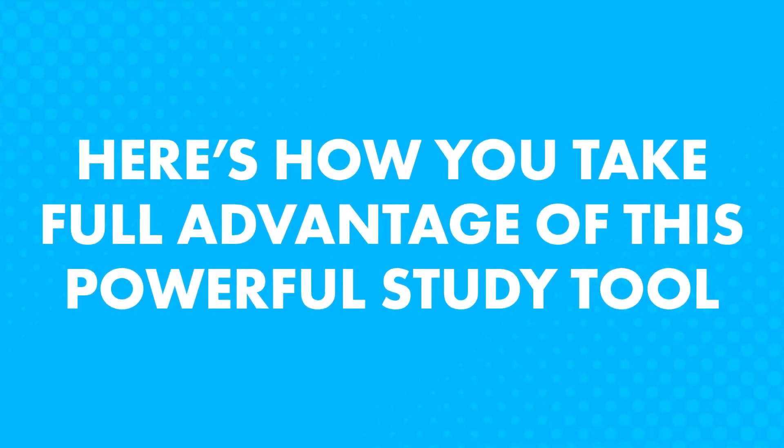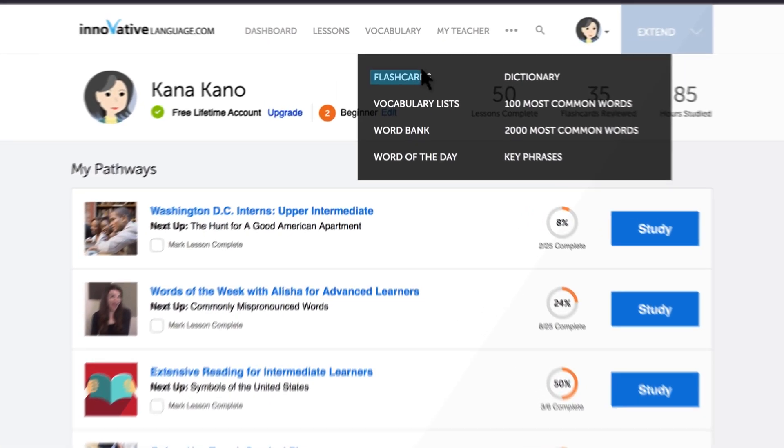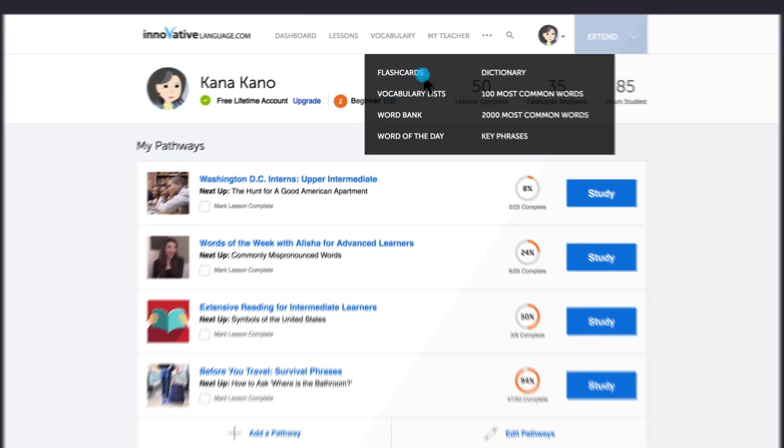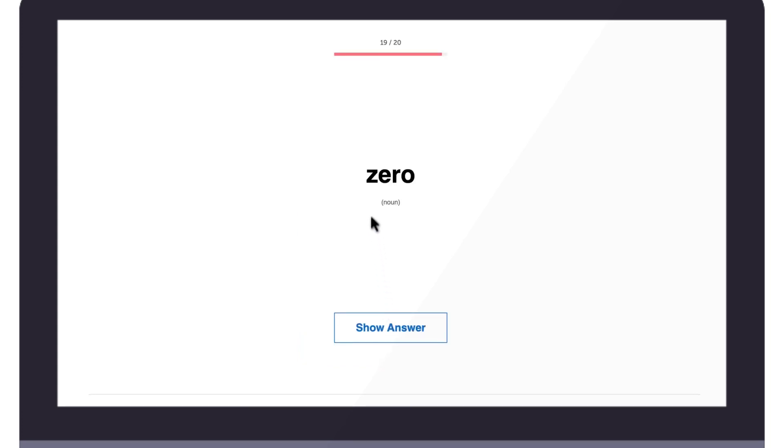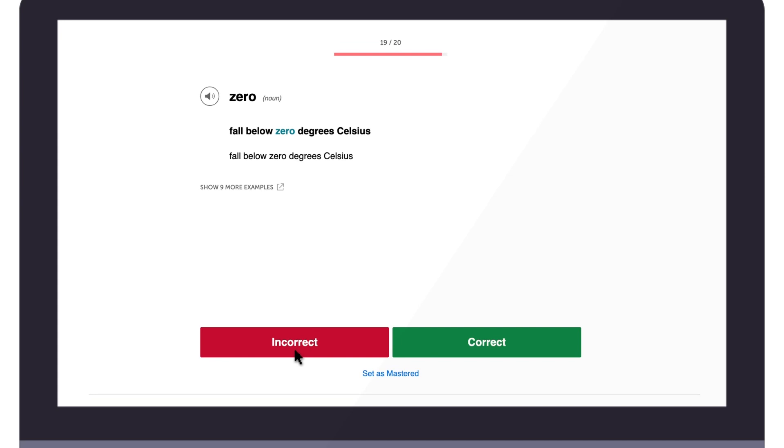Once you're done with a study session, that's it for the day. Your flashcards will remind you when to study again, so you never forget what you learned last time. So here's how you take advantage of this powerful study tool. Simply access flashcards in the vocabulary drop-down menu on the site. Inside, you already have the 100 must-know words deck prepared for you. Just click on study and start session to start learning. You'll see a flashcard with the word in the target language. Do you know the meaning? Click on show answer to confirm the meaning. Then, mark it as correct or incorrect. Based on your answer, the flashcards will start sorting and spacing out the words for you.